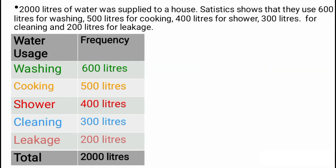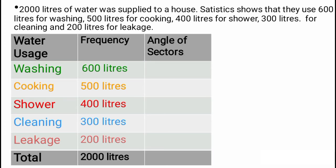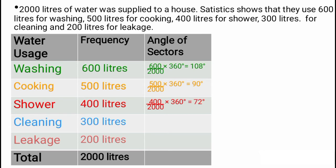Let's create one more column for angle of sector and solve each one. For washing: 600 over 2000 multiplied by 360 equals 108 degrees. Cooking: 500 over 2000 multiplied by 360 equals 90 degrees. Shower: 400 over 2000 multiplied by 360 equals 72 degrees. Cleaning: 300 over 2000 multiplied by 360 equals 54 degrees. Leakage: 200 over 2000 multiplied by 360 equals 36 degrees.